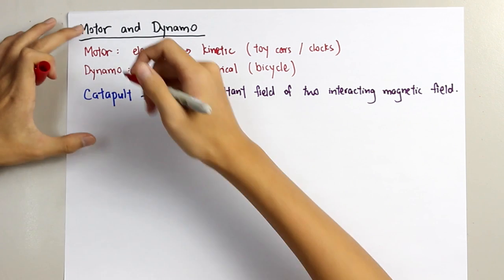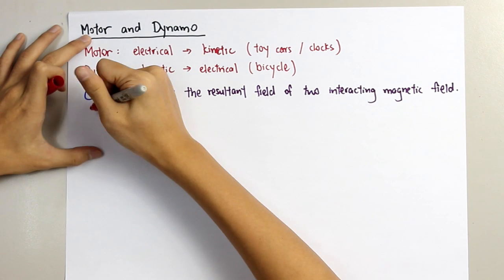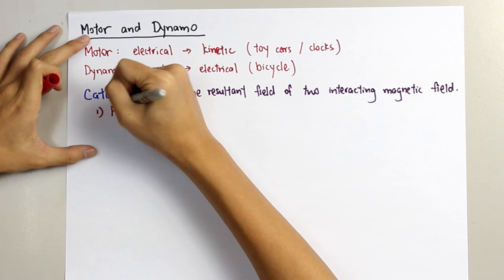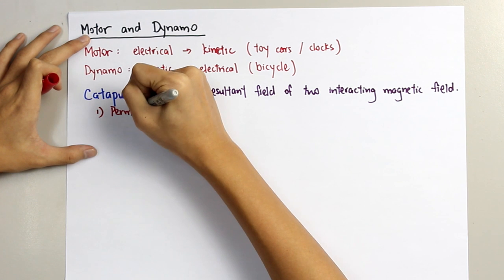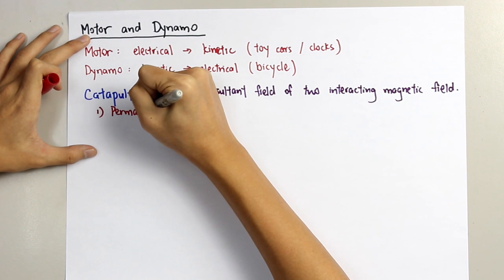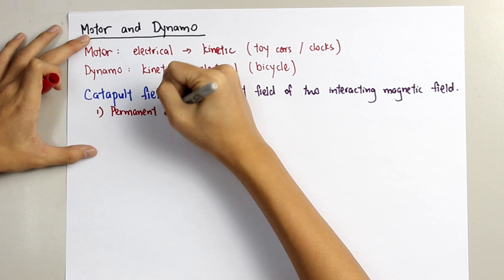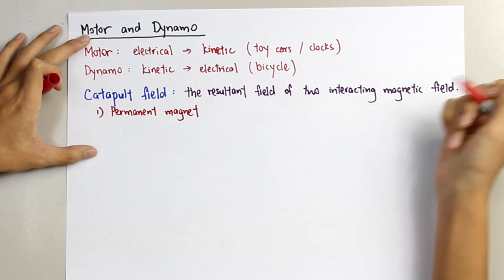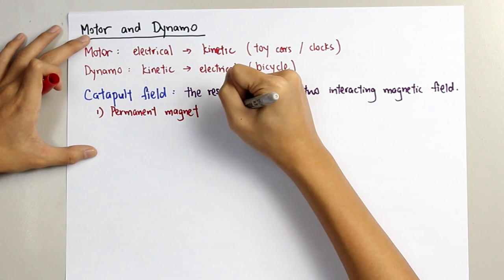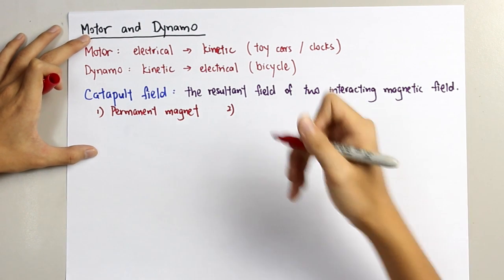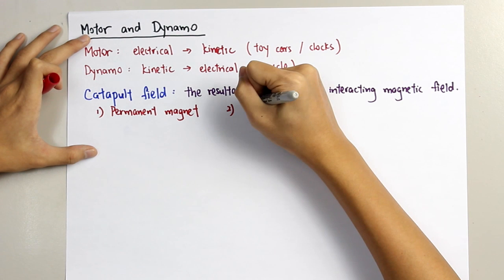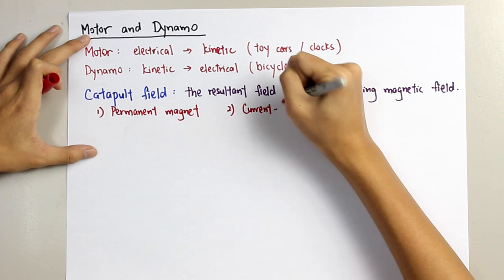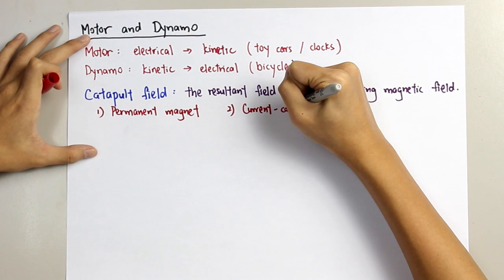The first one is the magnetic field due to a permanent magnet. And the second field is the magnetic field caused by a current-carrying conductor.